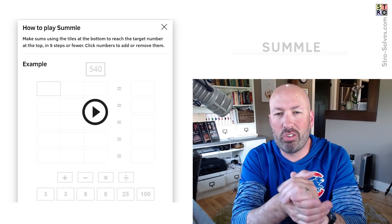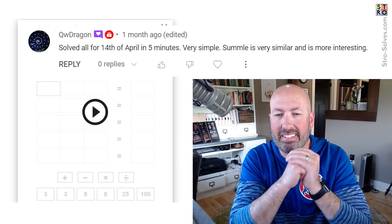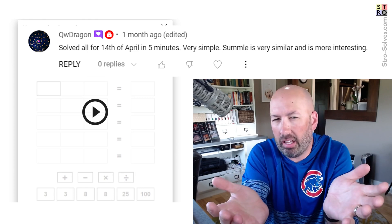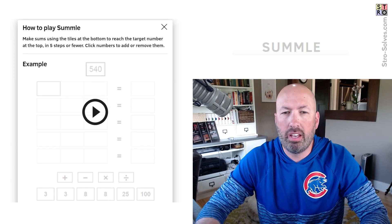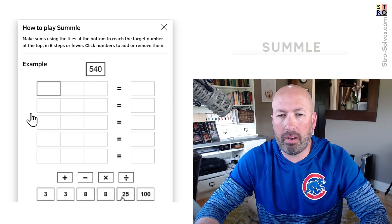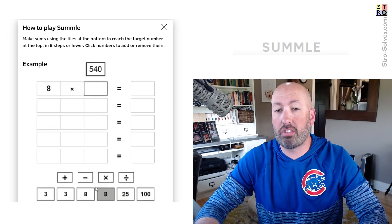All right, well I've had several requests to do Summle, so I'm taking a look at that today. This is a math game. I think it's kind of like Digits, but maybe slightly different. So it says we're making sums using the tiles at the bottom to reach the target number in five steps or fewer.